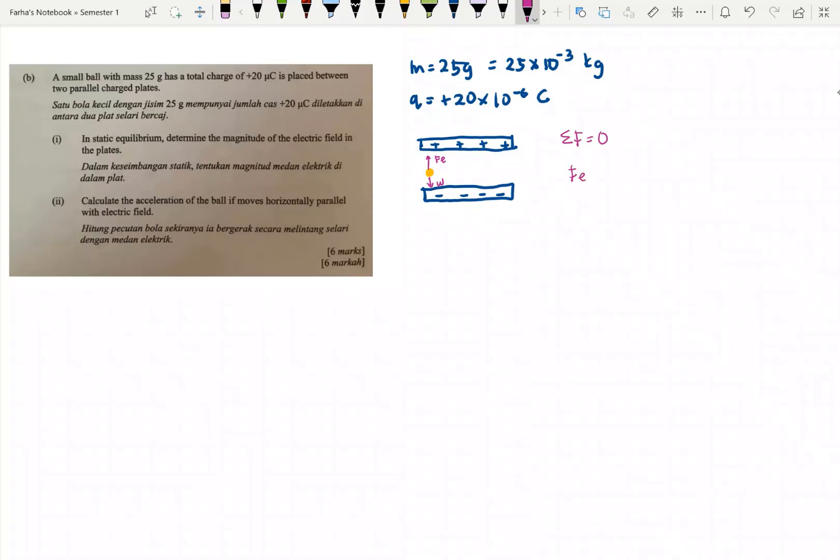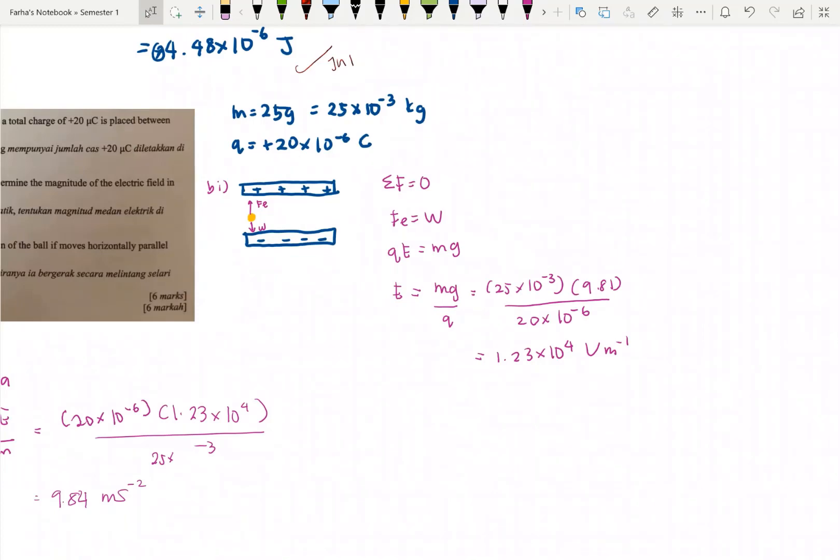From sum of F equals 0, therefore FE equals weight. Electric force equals QE and weight equals mg. Therefore E = mg/Q. M is 25×10^-3, g is 9.81, Q is 20×10^-6. We calculate and get 1.23×10^4 volts per meter. For question 1B1: one mark for concept, one mark for the equation, one mark for answer with unit.